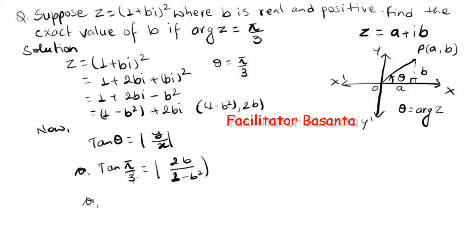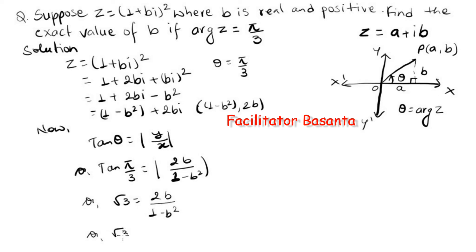tan(π/3) equals √3. We can remove the absolute value sign and write √3 equals 2b divided by (1 minus b²). Multiplying across, we get √3 minus √3·b² equals 2b.